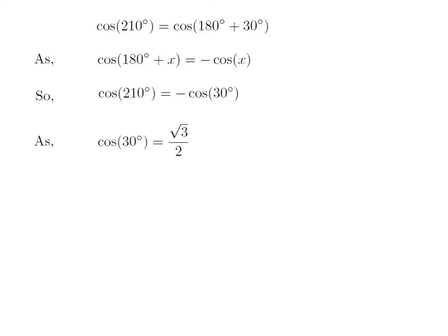We know the value of cosine of 30 degree is equal to square root of 3 upon 2. So, the value of cosine of 210 degree is equal to minus square root of 3 upon 2.